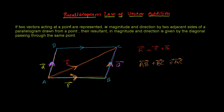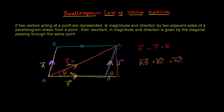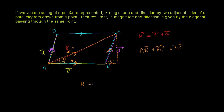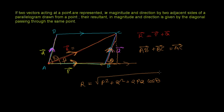You can prove this in the same way as in the previous triangle law of vector addition derivation. While deriving the magnitude of the resultant and the direction of the resultant, we derived the equations. The equation that gives the resultant magnitude is: R equals the square root of P squared plus Q squared plus 2PQ cosine theta, where theta is the angle between vector P and vector Q.